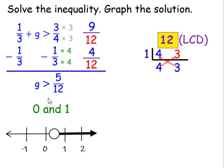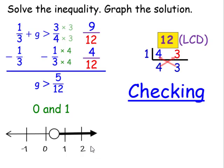And when we're checking, we can pick any number greater than 5 twelfths. So we can pick 6 twelfths, which is a half if we wanted to, or pick 1, 2, 3, and so forth. I chose to pick 2 because I know 1 third plus 2 is just 2 and 1 third. And 2 and 1 third, I can see that it's greater than 3 fourths. Therefore, my answer, g is greater than 5 twelfths, makes sense.